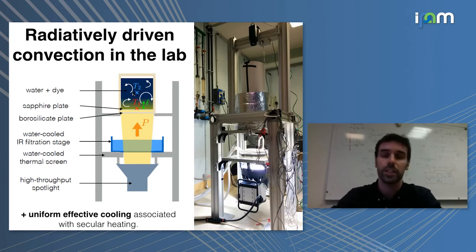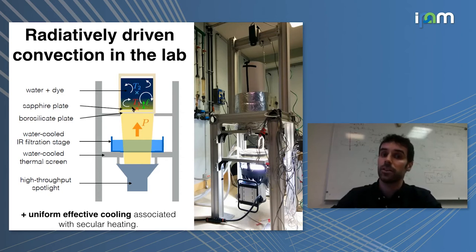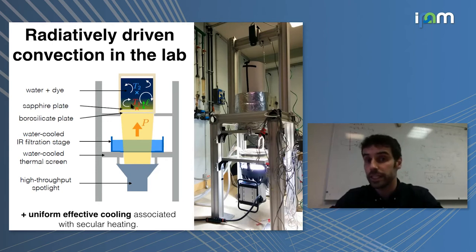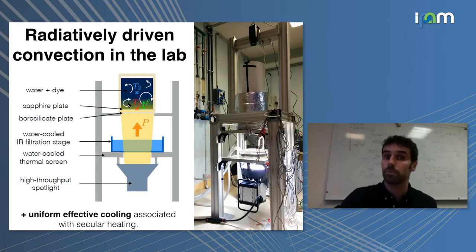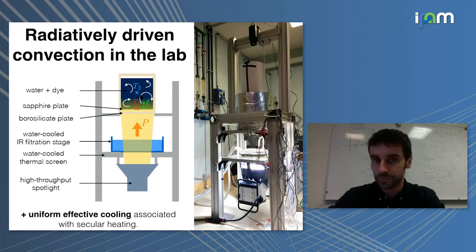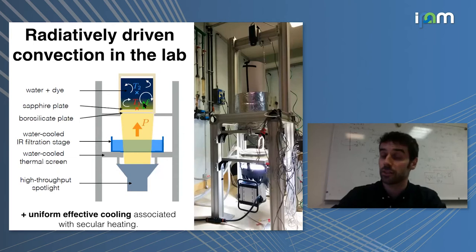The temperature difference between any two points inside the tank is governed by a combination of the radiative heating and an effective uniform cooling term associated with the secular heating of the entire tank. With this combination of radiative heating and uniform internal cooling, we bypass both the heating boundary layer and the cooling boundary layer. A key point of the experiment is that I can tune this absorption length L by changing the concentration of the dye.